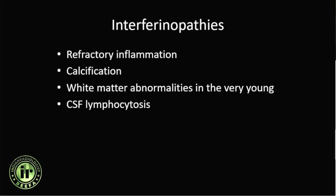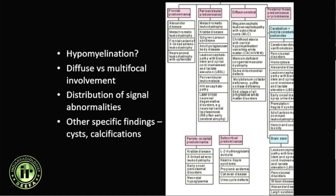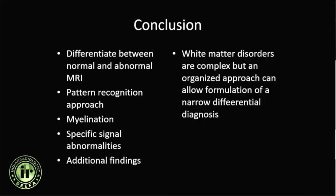In conclusion, when evaluating any patient with a suspected leukodystrophy: first confirm whether there is hypomyelination or whether myelination is appropriate for age; assess whether the white matter abnormality is diffuse and bilaterally symmetrical versus multifocal, patchy, and asymmetric; determine the distribution of signal abnormalities — frontal, periventricular, diffuse, parieto-occipital, subcortical, with or without brainstem or posterior fossa involvement. When we also look for other specific findings like cysts, calcification, malformations of cortical development, or spinal cord involvement, this focused pattern recognition approach allows us to narrow the differential diagnosis.